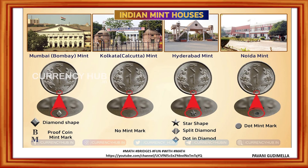We have four mints in our country, which we call Indian mint houses. A mint is the place where coins are manufactured. We have the Mumbai mint — previously called Bombay mint — and next Kolkata mint, Hyderabad mint, and Noida mint. We have four mints throughout our country where coins are minted.